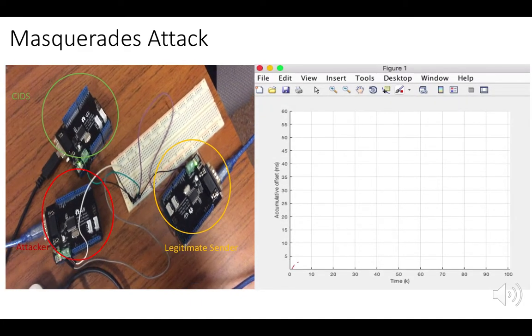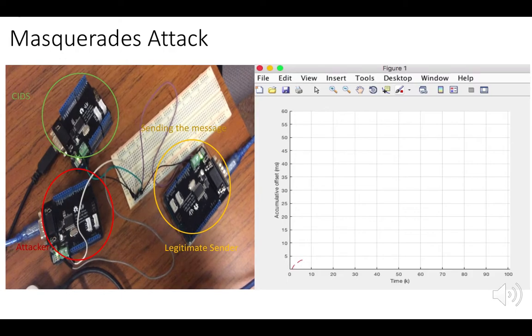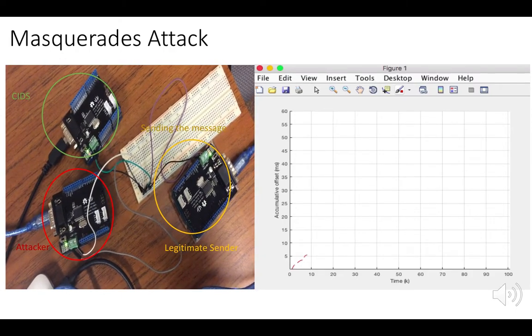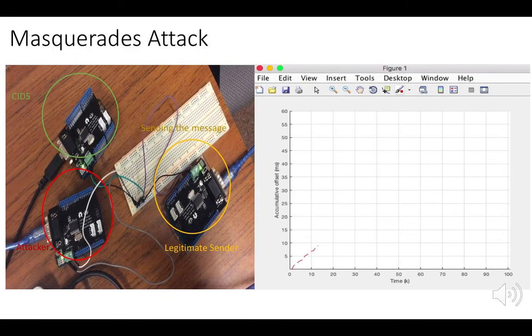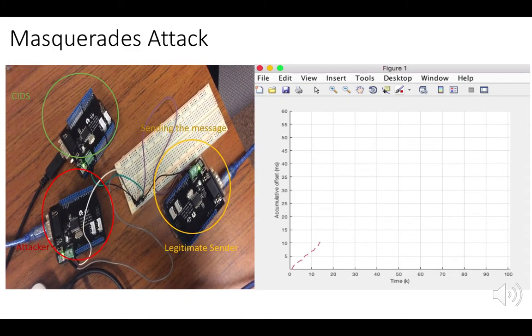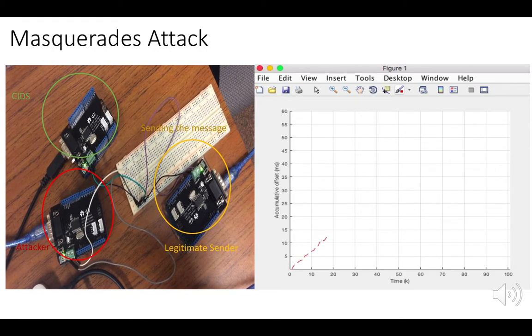At the start, the Legitimate Sender is sending messages. On the right side, we can see the visual analysis of the clock behavior, and it is quite linear, though not perfectly linear.